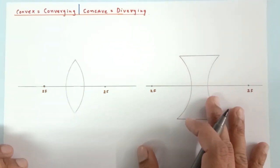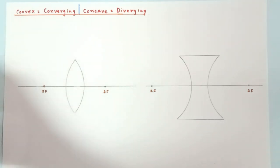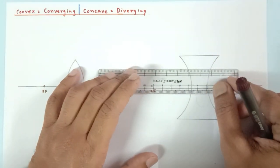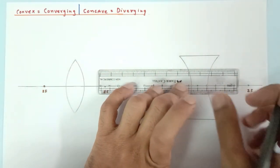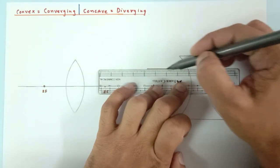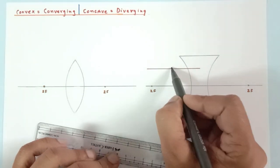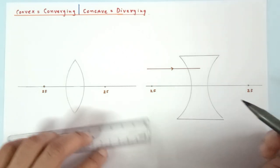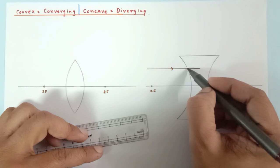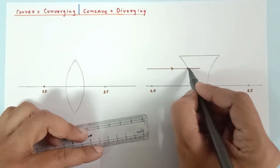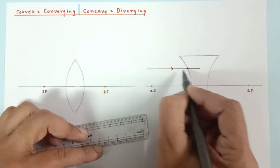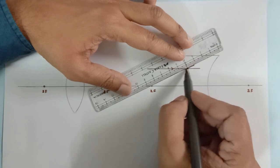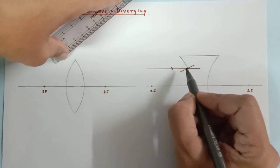Let's try to draw the ray diagram for the concave lens first. I'm going to take a ray which is parallel to the principal axis and bring it half inside the lens. This incident ray is parallel to the principal axis. The ray is hitting the surface at this point, and at this point I have to draw the normal, which passes through c or 2f. This is my normal.